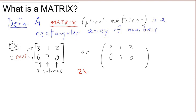This matrix has 2 rows and 3 columns, and therefore we call it a 2 by 3 matrix.